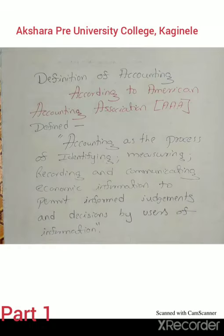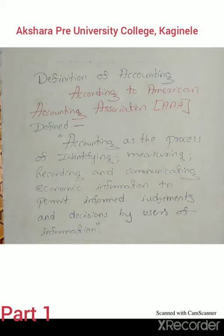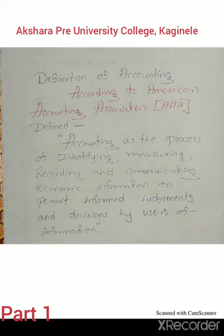Then this is the definition of accounting. According to the American Accounting Association — in short called AAA — they defined accounting as the process of identifying, measuring, recording and communicating economic information to permit informed judgment and decisions by users of information. This is one of the famous accounting definitions, given by the AAA, the American Accounting Association.